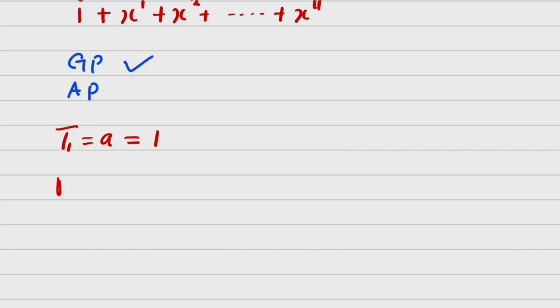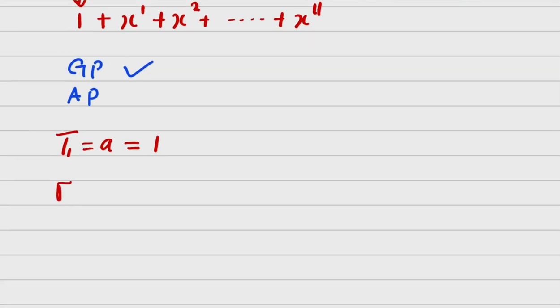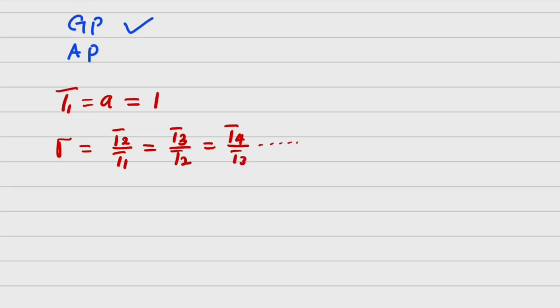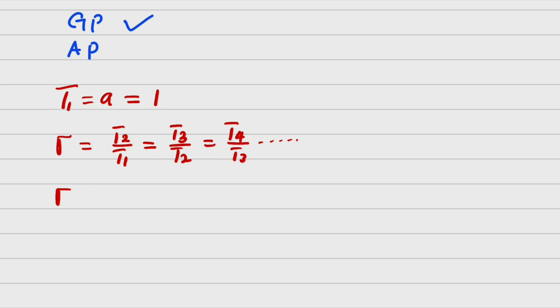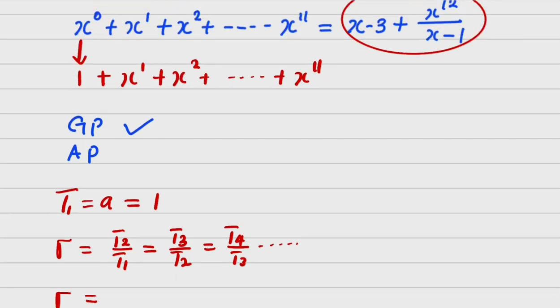The second thing we are to get, let's get our common ratio. Now common ratio is gotten from this formula T2 over T1 or we can say it is T3 over T2 or we can say it is T4 over T3. So it's just ratios of consecutive terms basically. So for us to get this, our R will be equals to, now let's check.